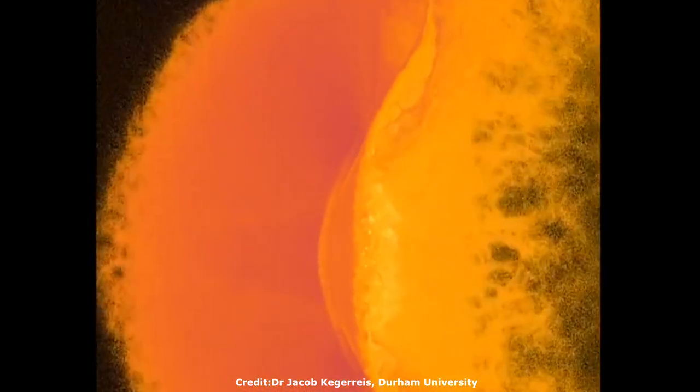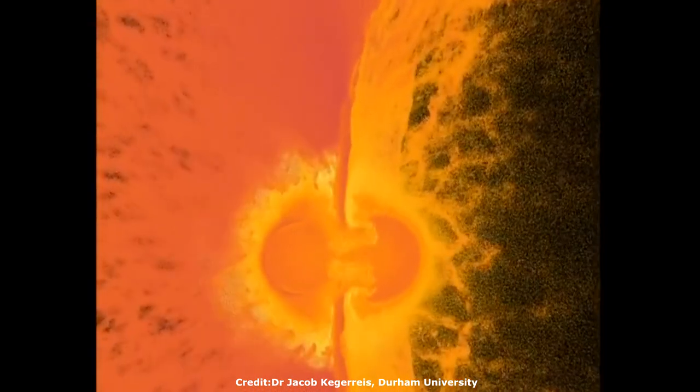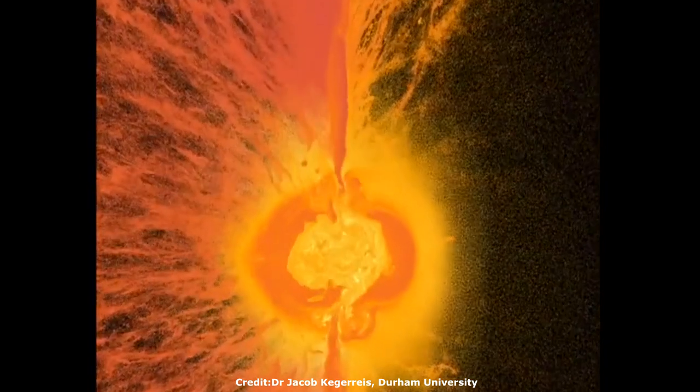The sun's gravity held everything in place, and the solar system began to settle into the configuration we know today.